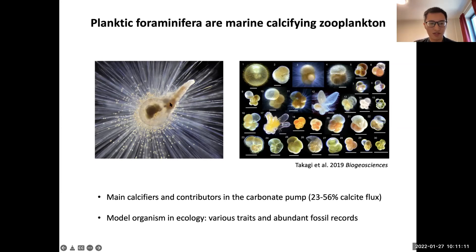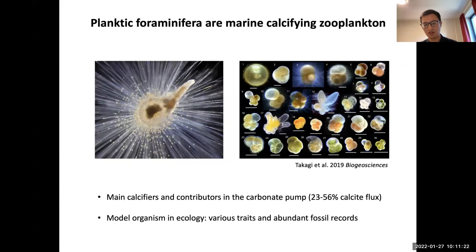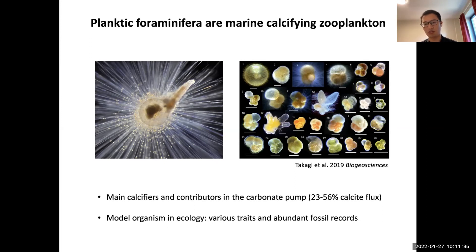This is their test, which is shown here. These species also have spines, and both of them are made up of carbonate. Basically, when FoRan die, this calcite material sinks into the marine sediment and therefore becomes an important part of the marine carbon cycle and influences our climate.